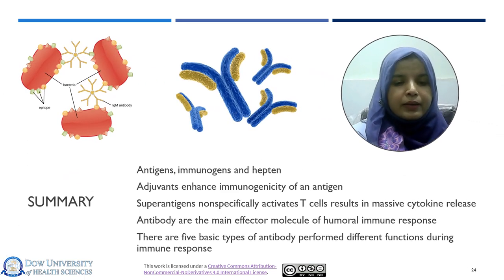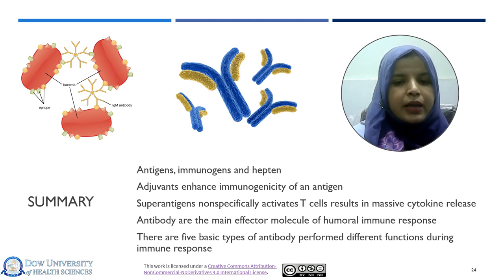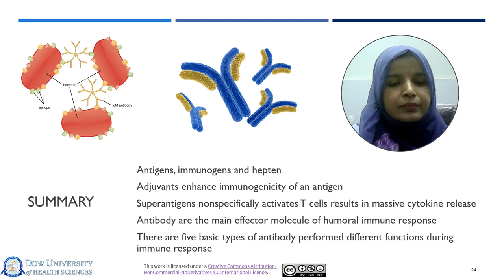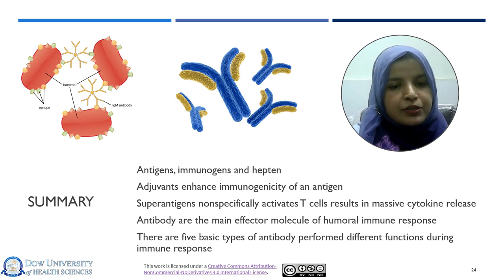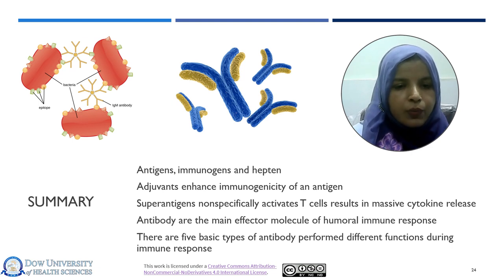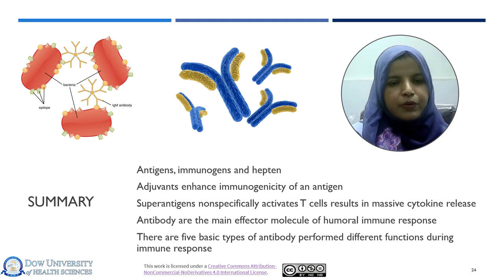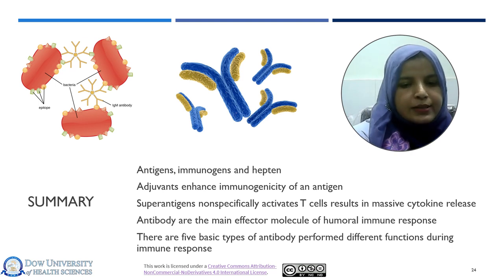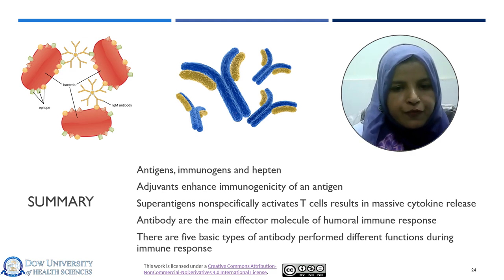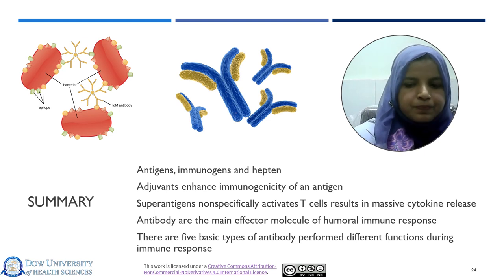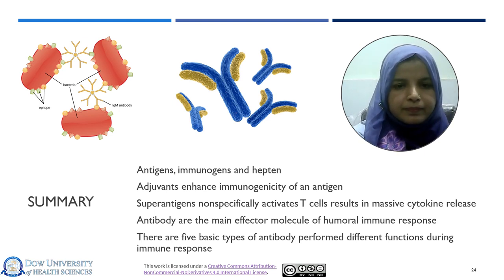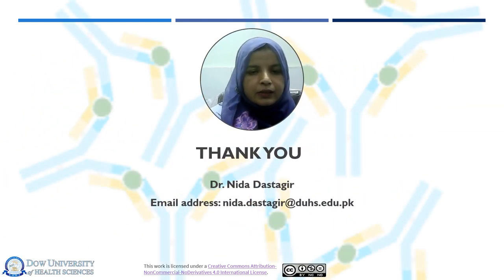We can summarize our lecture here. We have discussed the basic concepts of antigens, immunogens, and haptens. We have also discussed the basics of adjuvants and how adjuvants work, and what super antigens are. We can conclude that antibodies are the main effector molecules of humoral immune response, there are five basic types of antibodies, and they perform different functions during the immune response. Thank you so much.